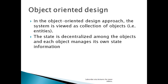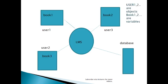Now let's see an example. Here there are some objects: User1, User2, User3. We can call these object entities as well. They have their own variables such as Book1, Book2, Book3 — with attributes like Book name, BookID, etc. So User1, 2, 3 are the objects, and Book1, 2, 3 are the variables. This is a LMS — Library Management System — structure.